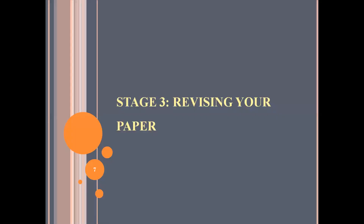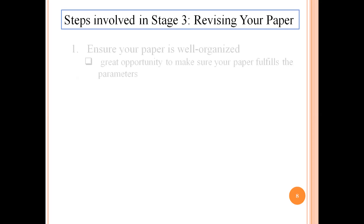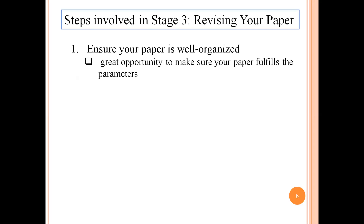Stage 3 is revising your paper. The first step is to ensure your paper is well organized. After finishing your first draft, give it a read and look for any organizational issues. Make sure that each sentence and paragraph is well connected with the next one. At this time, you may have to rewrite a paragraph or swap different sections or lines in the paragraph to get the link between them. Giving time for revision is very important. This is also a great opportunity to make sure your paper fulfills the parameters of the research problem and the results you have presented.